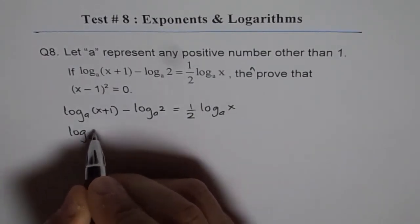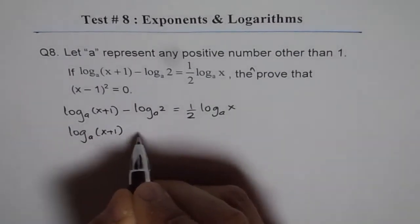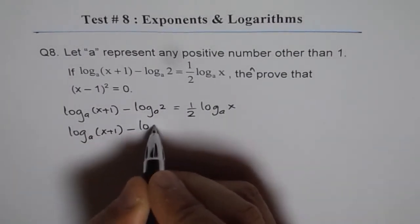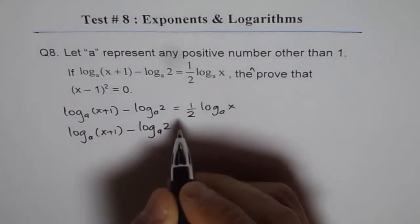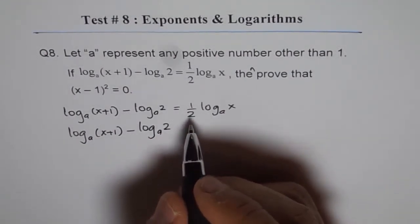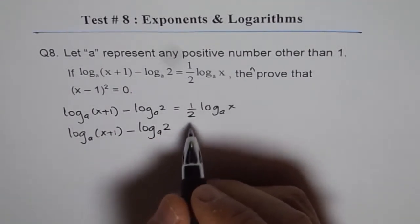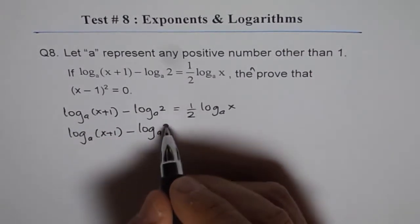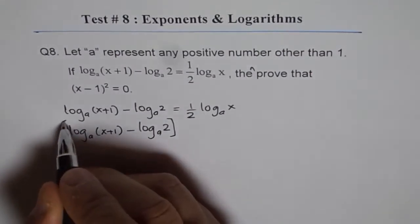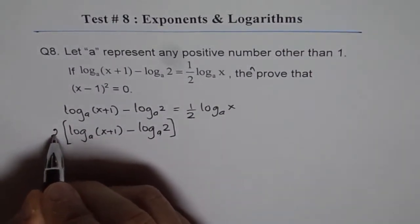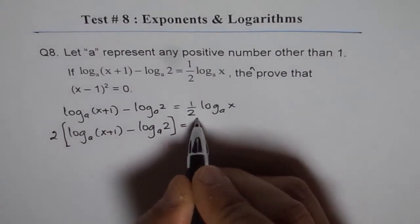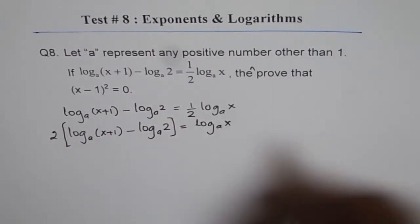We can write this as log A of x plus 1 minus log A of 2. And what we can do is multiply by 2 and then bring them on one side. So let's multiply this by 2 equals log A of x.